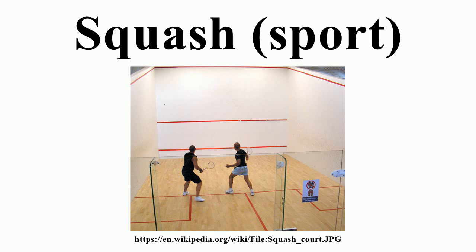The first courts built at this school were rather dangerous because they were near water pipes, mattresses, chimneys, and ledges. The school soon built four outside courts. Natural rubber was the material of choice for the ball. Students modified their rackets to have a smaller reach to play in these cramped conditions. The rackets have changed in a similar way to those used in tennis.